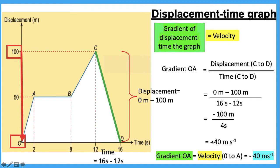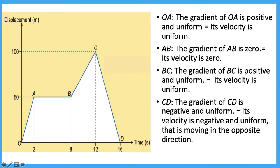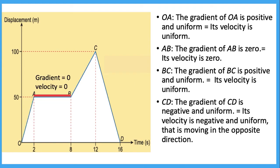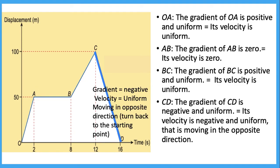The negative value here represents the direction of the moving object, which means the object has turned back and is moving towards its starting point. This is the analysis that can be obtained from this graph. At points OA and BC, the gradient is positive and uniform, so the velocity is also uniform — the object is moving at uniform velocity. At point AB, the gradient is zero, so velocity is also zero because the object is at rest. At point CD, the gradient is negative but uniform, meaning the velocity is also negative and uniform — the object is moving in the opposite direction.